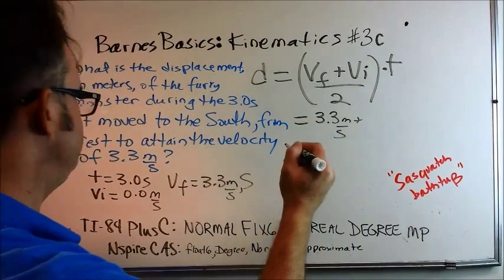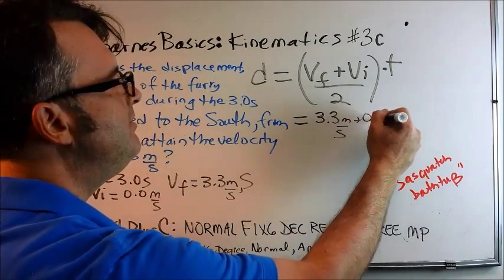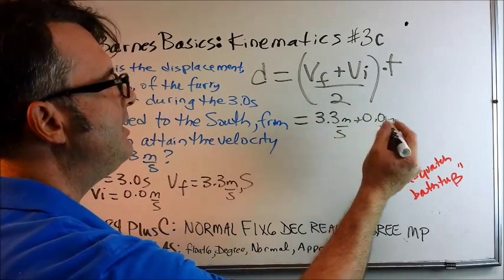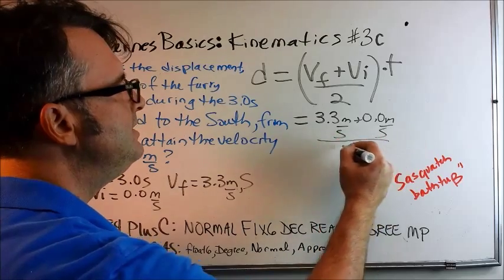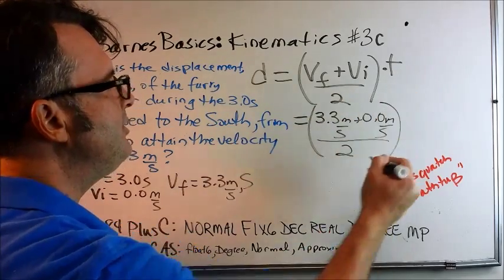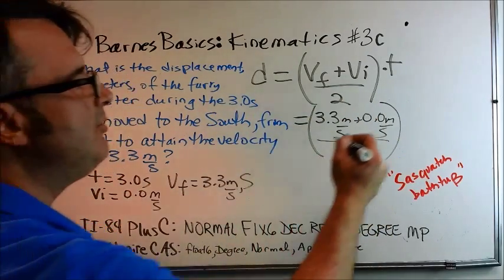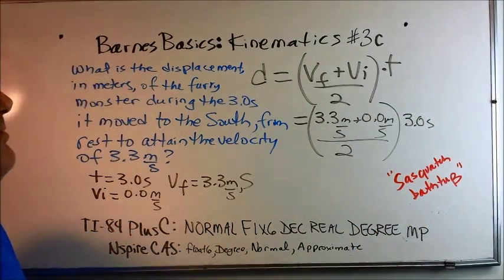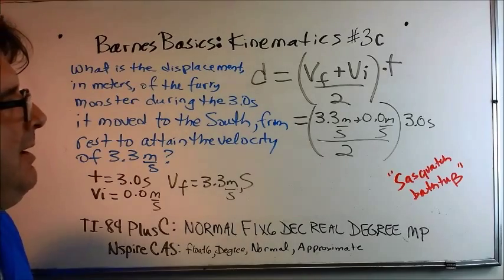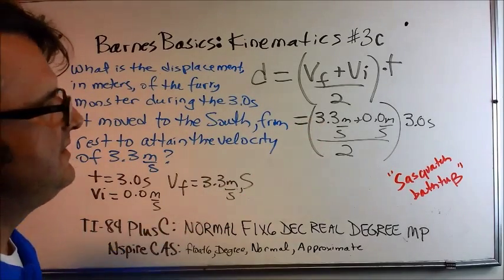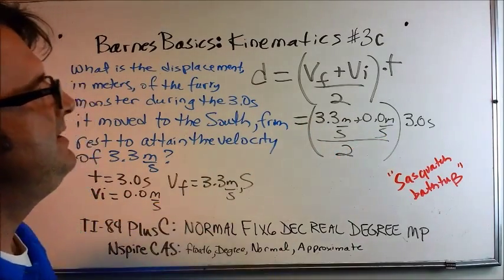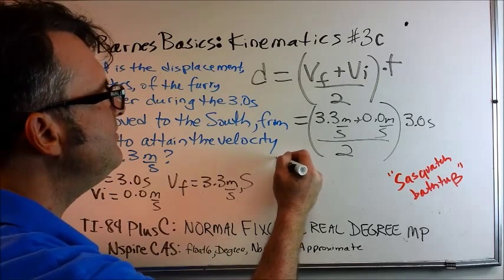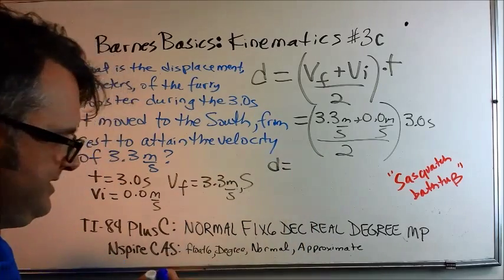In this equation, we know that the final velocity is 3.3 meters per second. The initial velocity is 0.0 meters per second. And we are going to divide all of this by 2. And then we're going to multiply it by the time, 3.0 seconds. So we're going to perform the operations inside of the parentheses first, and then multiply by the time at the end.